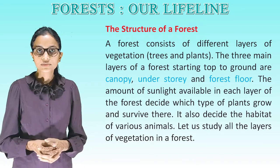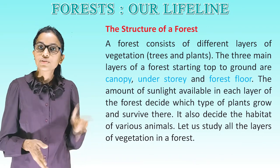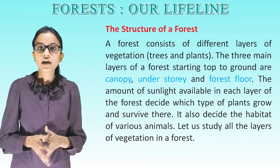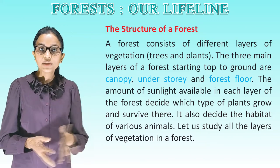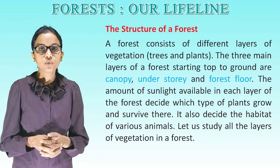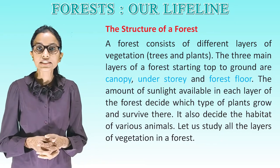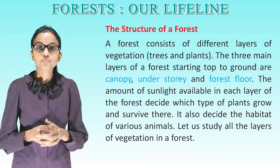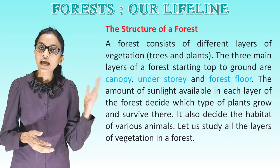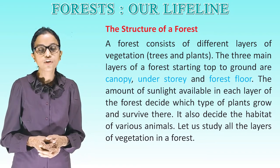The structure of a forest: A forest consists of different layers of vegetation, trees and plants. The three main layers of a forest from top to ground are canopy, understory and forest floor. The amount of sunlight available in each layer decides which type of plants grow and survive there, and also the habitat of various animals.